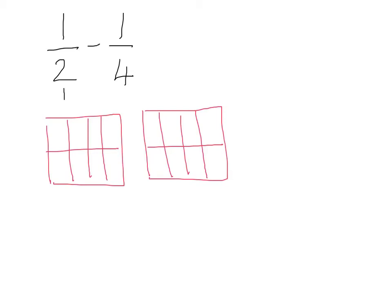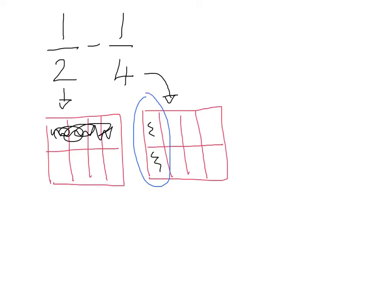In my first diagram, which correlates with my first fraction, one half of the rooms in this building are occupied, so I color those in. In my second diagram, my second fraction correlates with it, and one quarter of the rooms are occupied. Now, subtraction works a little differently — this second diagram becomes your measuring stick. You need to take away those rooms from the other diagram, so two rooms need to be subtracted.